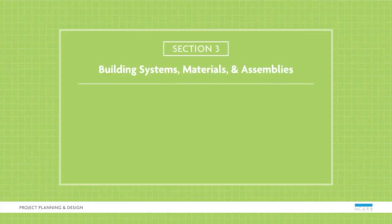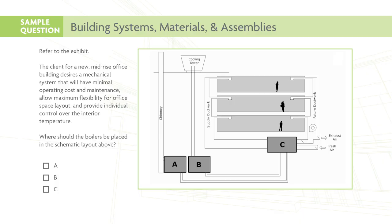In the Building Systems, Materials, and Assembly section, you'll focus on other disciplines with which an architect must be familiar, along with various components that make up the building. Let's look at a sample question. The client for a new mid-rise office building desires a mechanical system that will have minimal operating costs and maintenance, allow maximum flexibility for office space layout, and provide individual control over the interior temperature. Where should the boilers be placed in the schematic layout? Here is the correct response. Heating is provided by boilers, which should exhaust through the chimney, making location A the correct response. The fan room, location C, is the central hub for the system, conditioning the fresh air before distributing it through the building. Cooling is provided by the chilled water plant, which requires a cooling tower at location B. This is an AE-level item requiring analysis of the client requirements and an evaluation of system options.